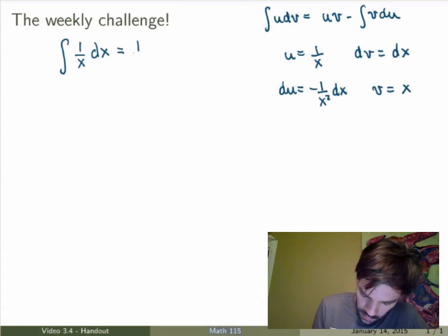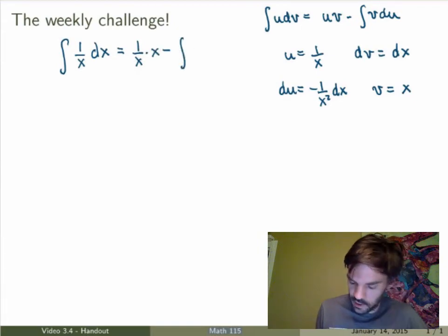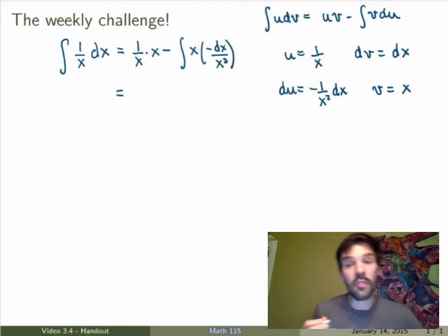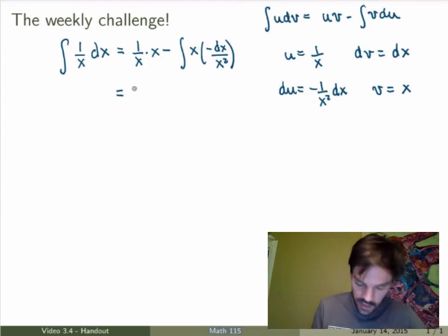uv gives me 1/x times x, minus the integral of v du, which is x times minus dx over x squared. You can now simplify the right hand side: 1/x times x is 1, minus minus cancels, I get plus, and then I get the integral of dx over x.